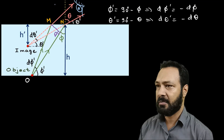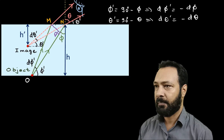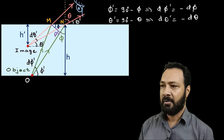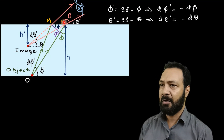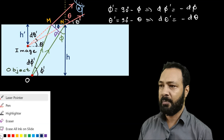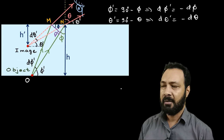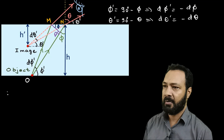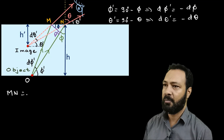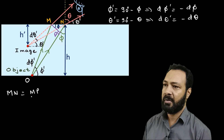In the triangle with points M, N, and P, this angle is also phi. So from the triangle MNP, if I want to write MN, then MN = MP divided by cos(phi).